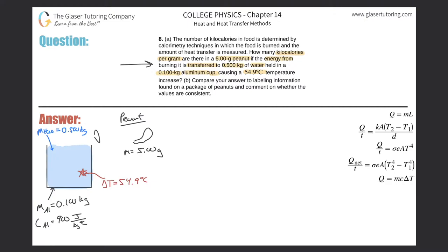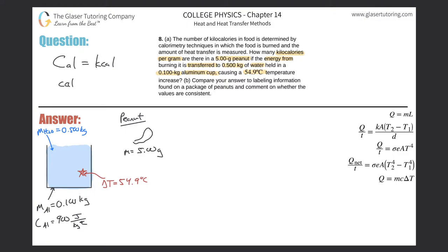There's a lot going on here, so create a little picture and try to tell a story. We have this peanut, and you know there's energy inherent in food — that's the whole point of the kilocalorie labels. You might say, 'Wait, they're labeled in calories.' Well actually, the calories on the nutritional labels are actually kilocalories. Whenever you see 'Calorie' written with a capital C, that's actually a kilocalorie. If written with a lowercase c, that's just a regular calorie.